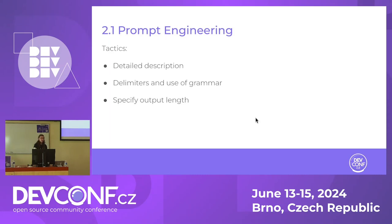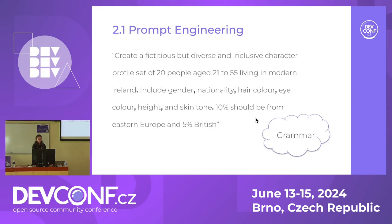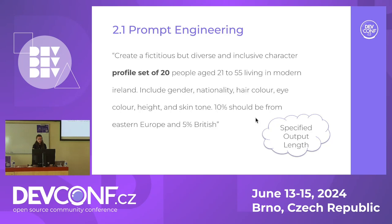We used prompt engineering to generate the prompts and make it more efficient. The tactics we used were: providing a detailed description, using delimiters and proper grammar, and specifying the output format. It seems obvious to give a detailed description, but things like delimiters and grammar aren't as obvious — they really help the model understand the key parts of your prompt, similar to how grammar helps a person understand something better. We gave specifics like percentages, age ranges, and a particular place, used proper punctuation, and told it how many profiles we wanted.